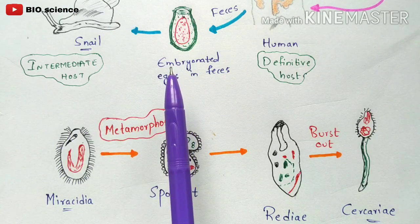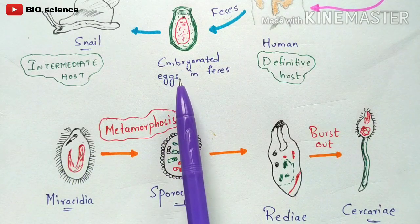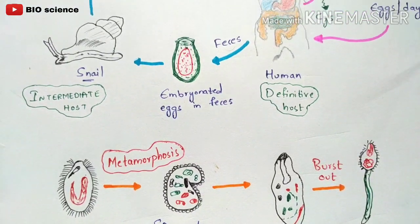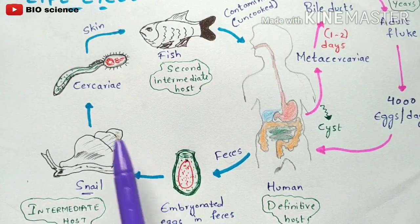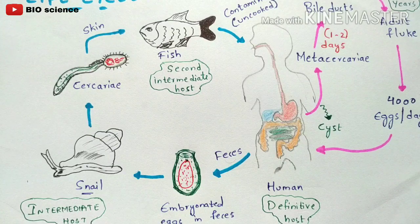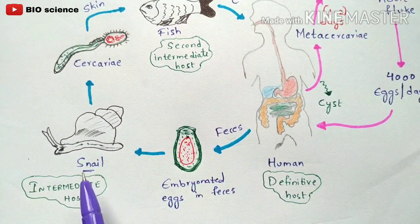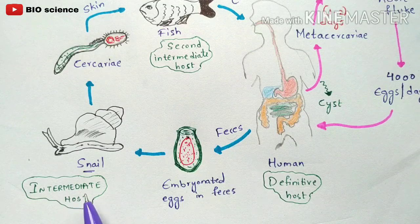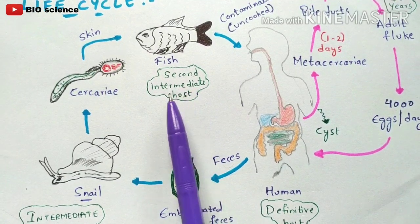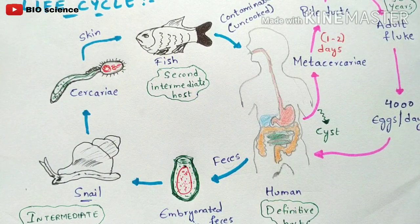Once hatching occurs, the miracidia are released from the eggs. The full development process repeats, producing cercariae that become free-swimming in water, are consumed by fish, and the fish are consumed by humans — repeating the cycle. To summarize: humans are the definitive host, snails are the primary (first) intermediate host, and fish are the secondary (second) intermediate host. This completes the life cycle of Clonorchis sinensis.